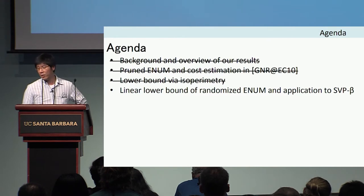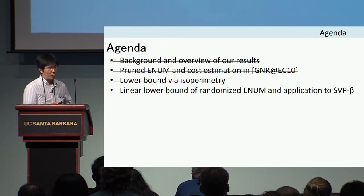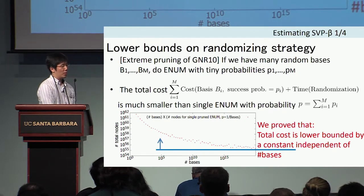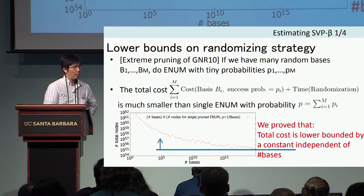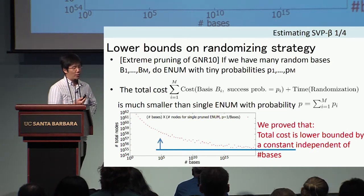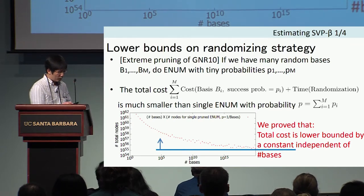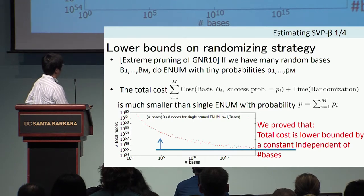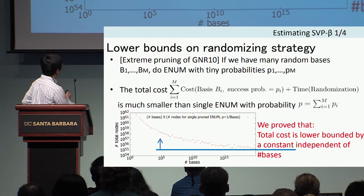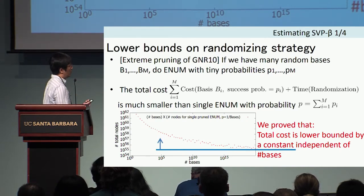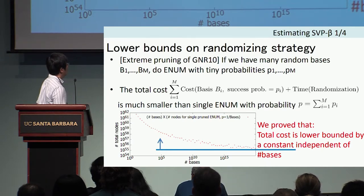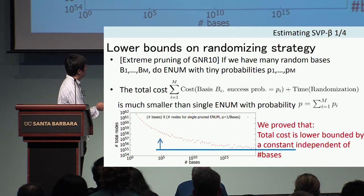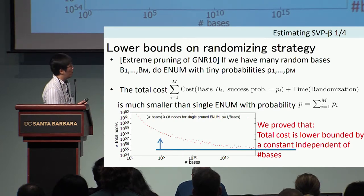Secondly, we have shown a lower bound for randomized enumeration. The GNR external pruning strategy proposes that if we use many random bases and perform enumeration with tiny probability each time, it is much faster than single enumeration. The total expected cost using many bases is much smaller than single enumeration. But it was unclear whether a lower bound exists. In this paper, we show that these values are bounded below by a constant.